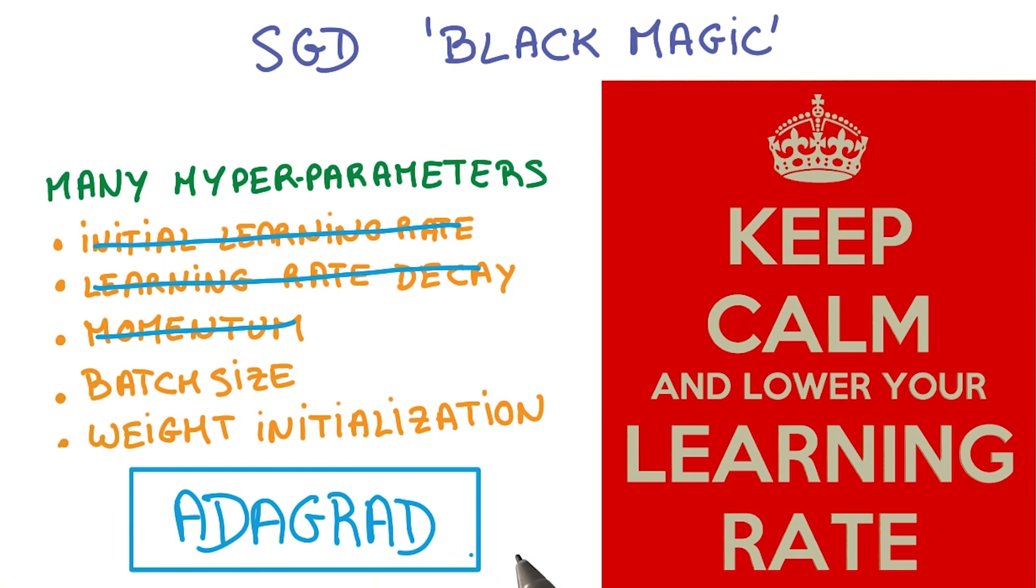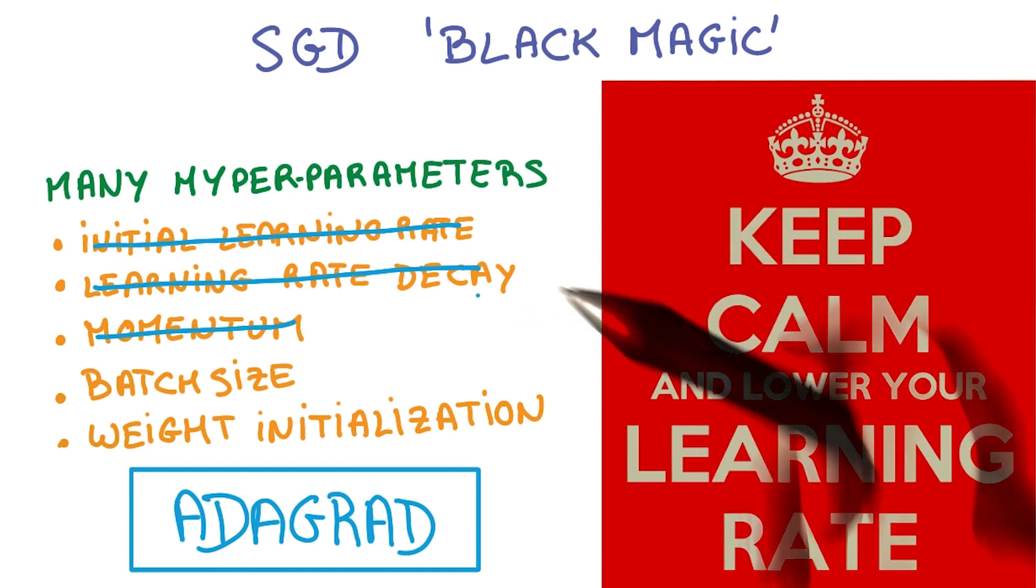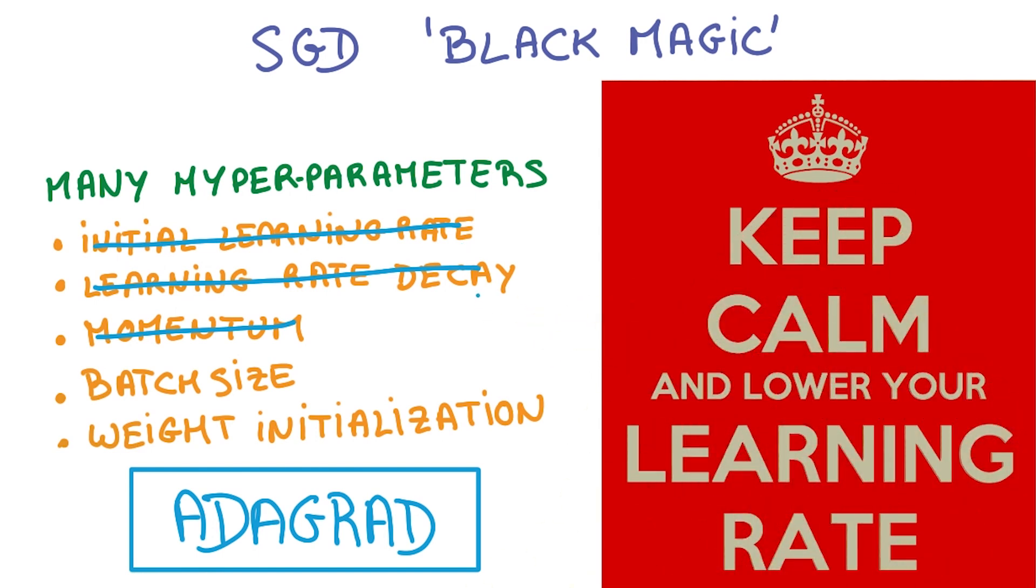Adagrad is a modification of SGD, which implicitly does momentum and learning rate decay for you. Using Adagrad often makes learning less sensitive to hyperparameters. But it often tends to be a little worse than precisely tuned SGD with momentum. It's still a very good option, though, if you're just trying to get things to work.